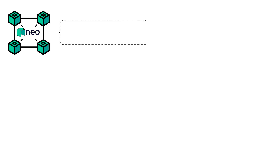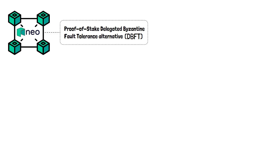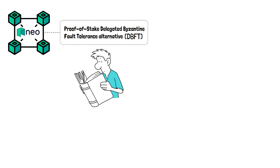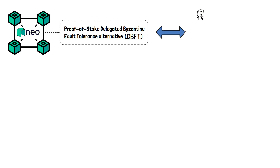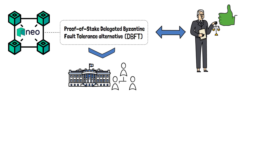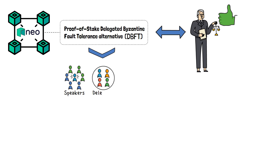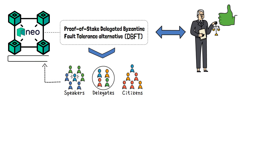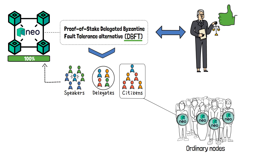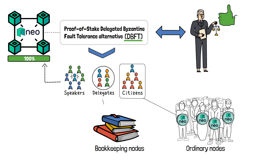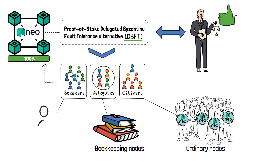When it comes to the NEO blockchain, it operates on a Proof of Stake Delegated Byzantine Fault Tolerance Alternative, or DBFT. This consensus mechanism links directly with NEO's regulatory compliance, as it operates similarly to a country's governance system. The consensus mechanism has its own speakers, delegates, and citizens, ensuring that the network is fully functional. In terms of DBFT, citizens are considered to be NEO token holders, or ordinary nodes. Bookkeeping nodes can be considered delegates, while the speaker is a randomly chosen delegate, or node.